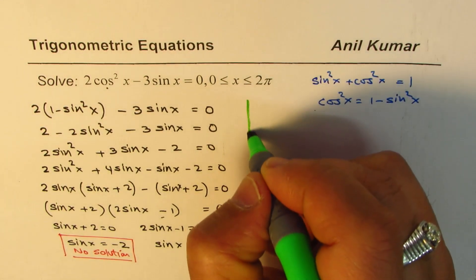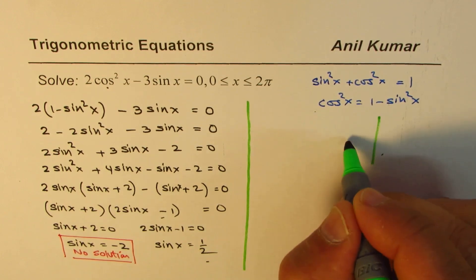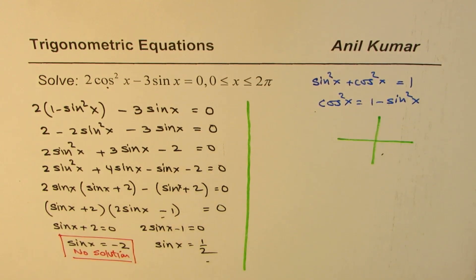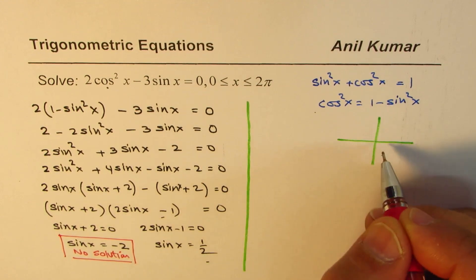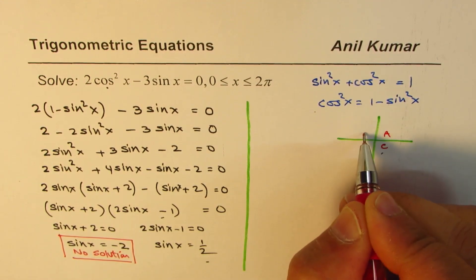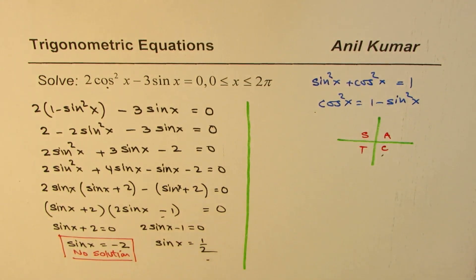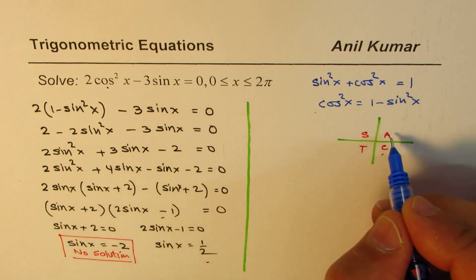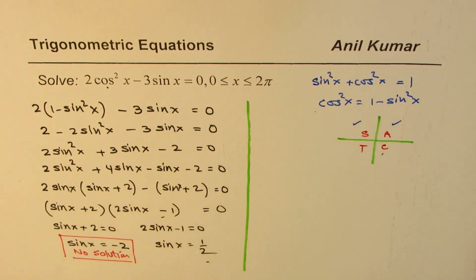For sinx = 1/2, we do have a solution. We are looking within the domain 0 to 2π, which means one full circle. We know sine is positive, and we are looking for a positive value of 1/2, so sine is positive in two quadrants: the first and second quadrants.